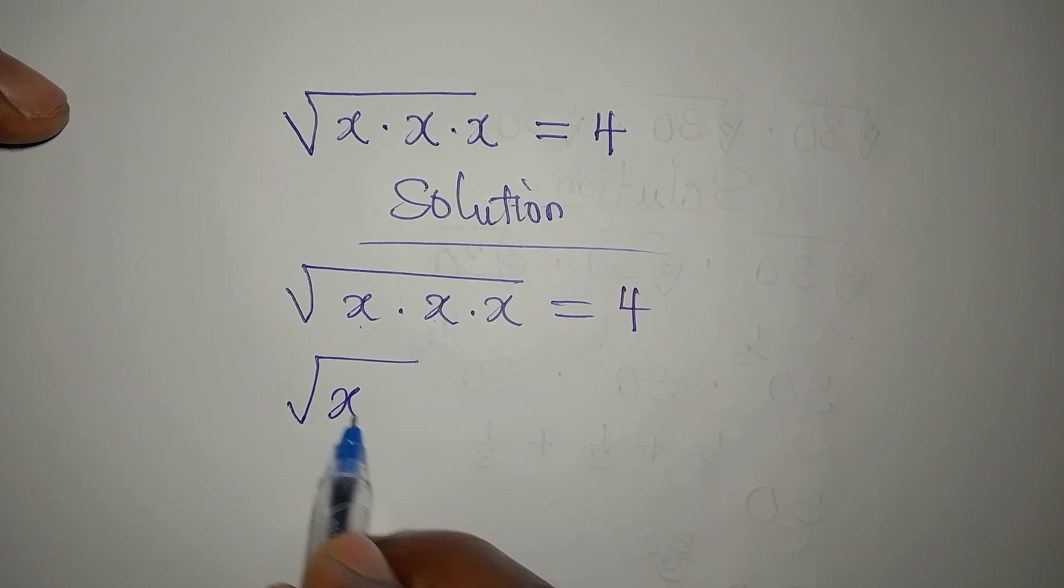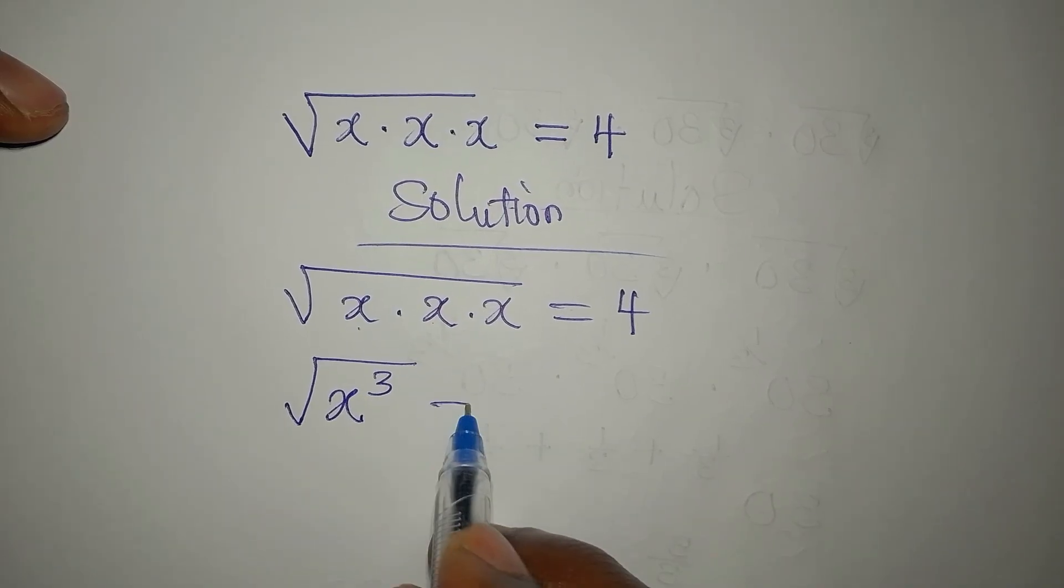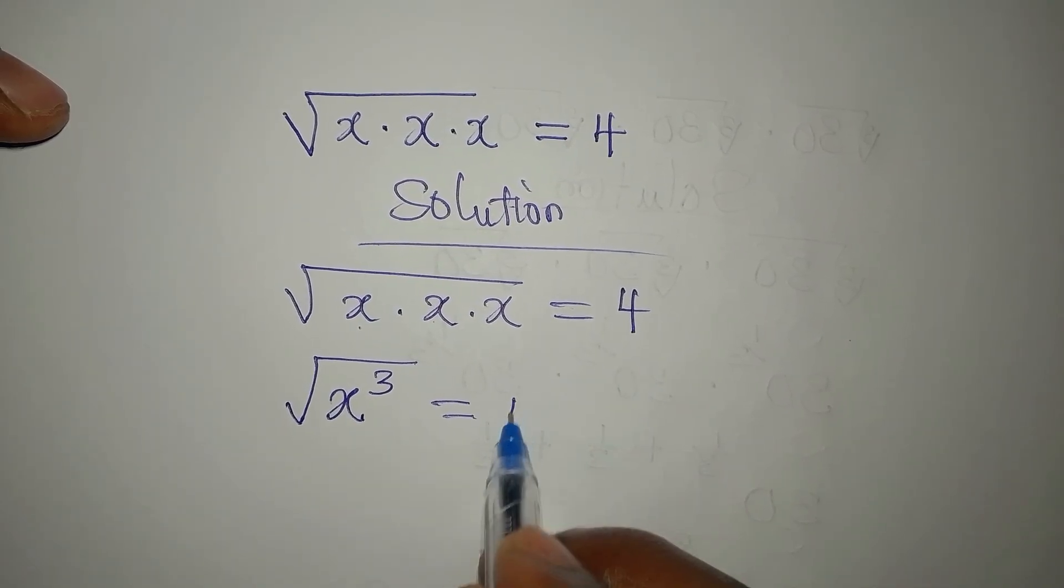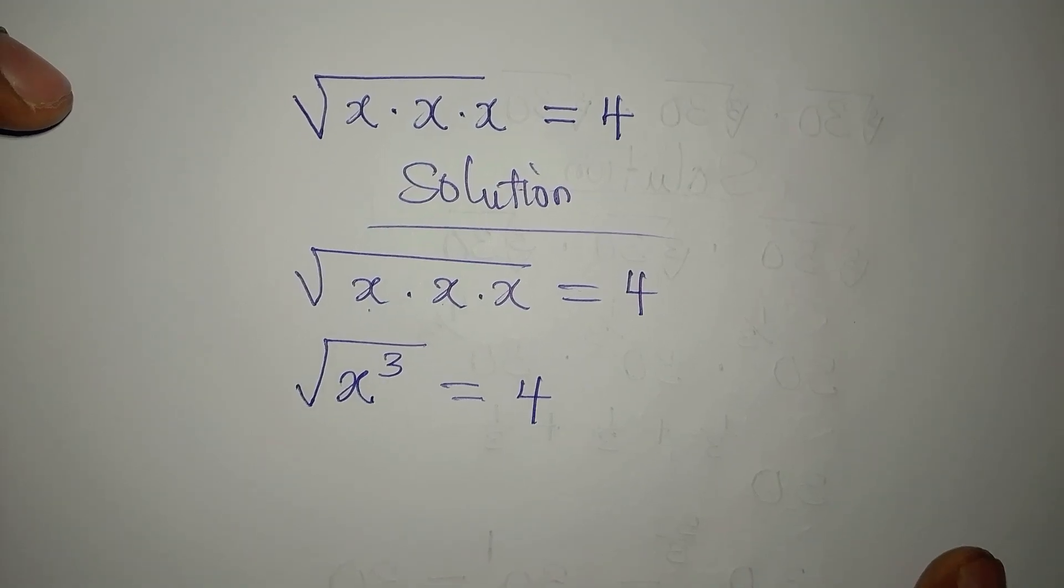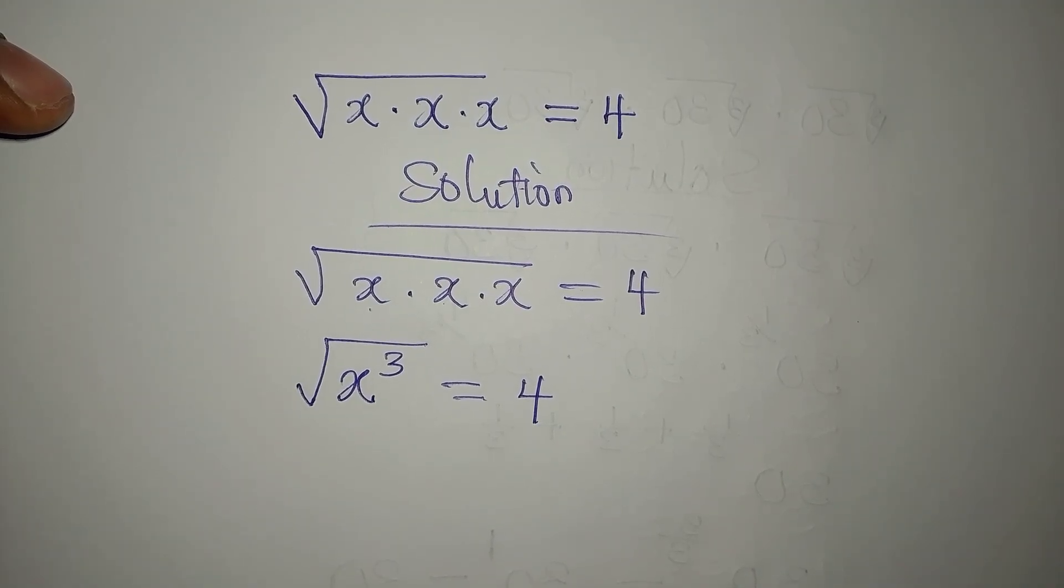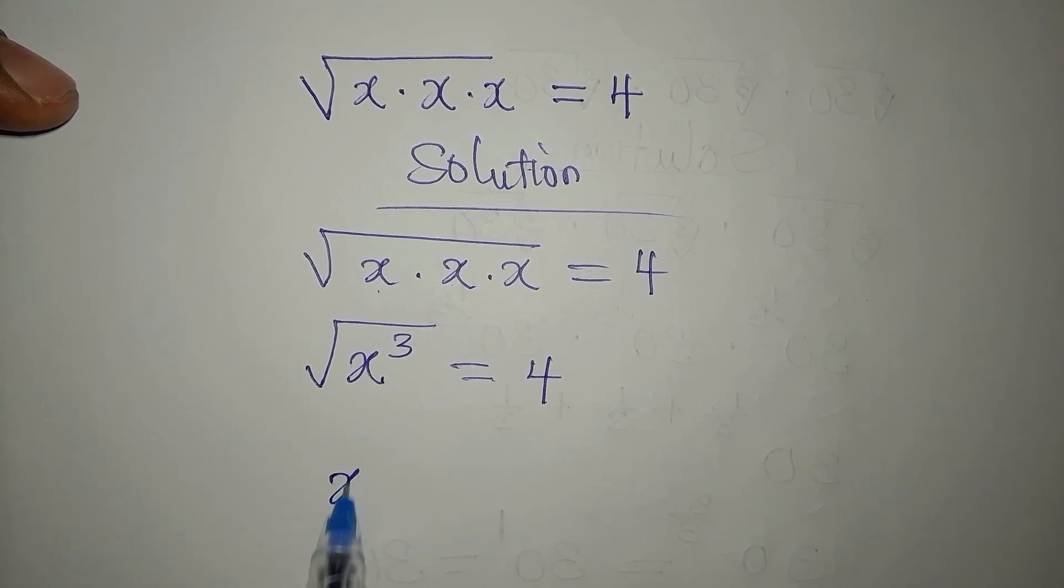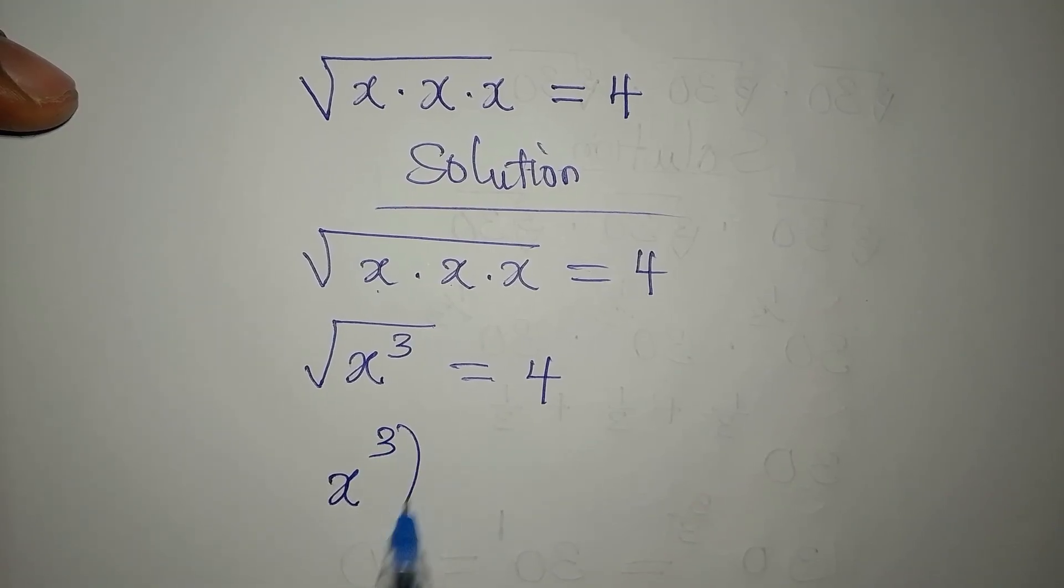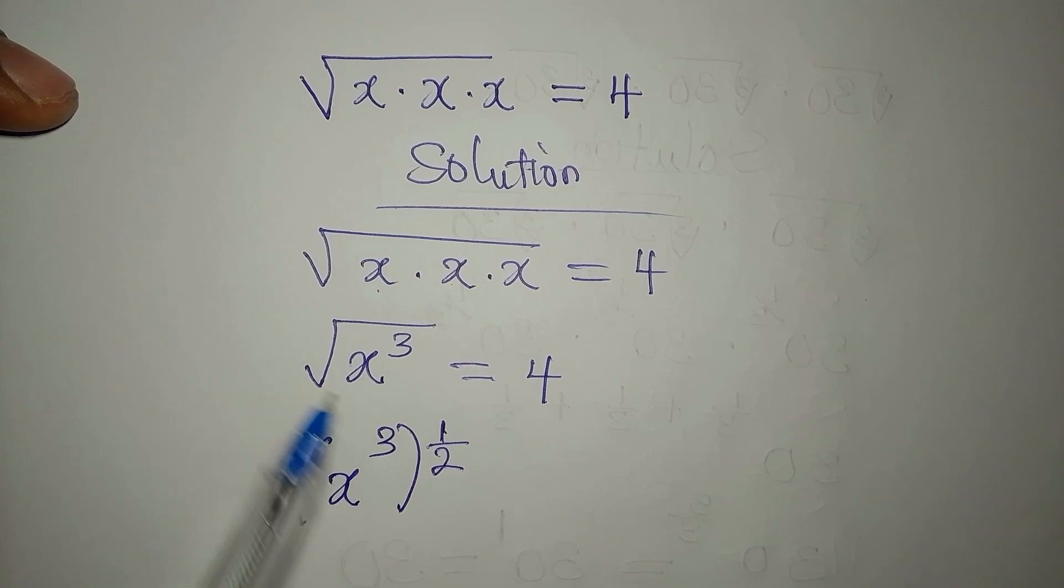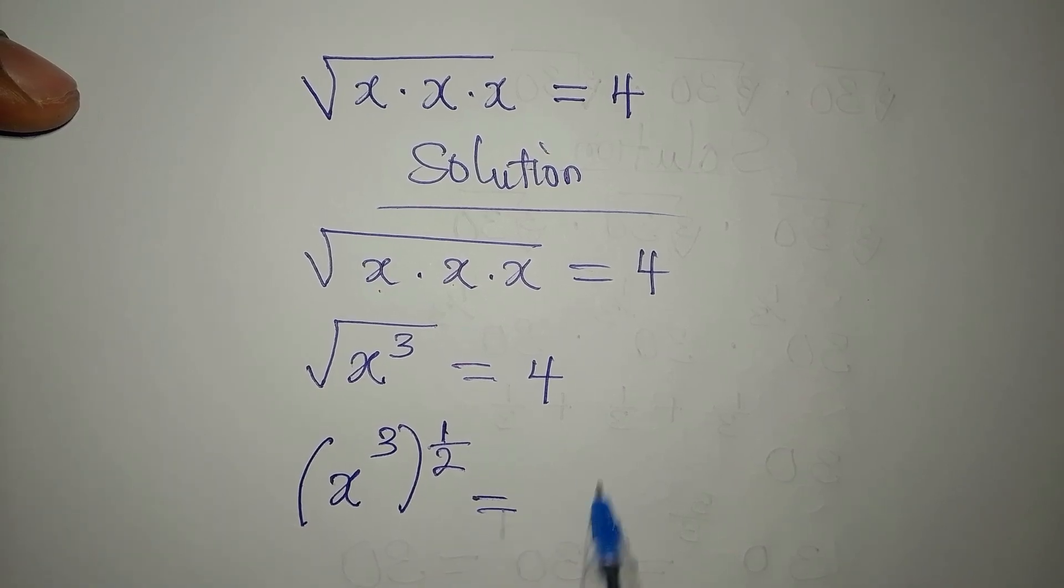So we have the square root of x to the power of 3 equal to 4. Now, the next thing is to work on this. This is the same thing as x to the power of 3 to the power of 1 over 2, because of the square root, and this is equal to 4.